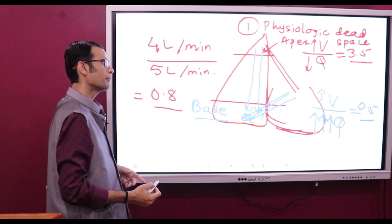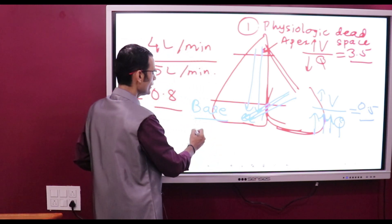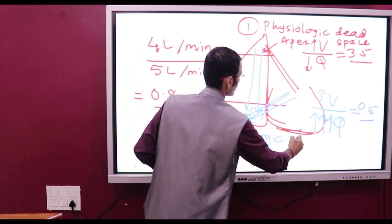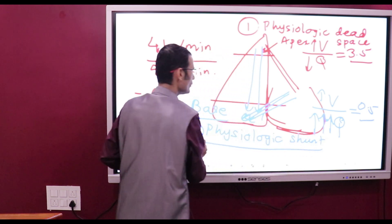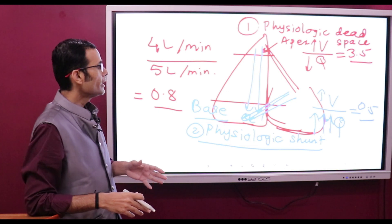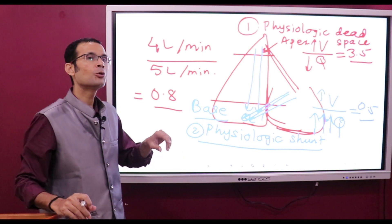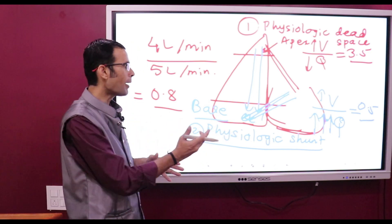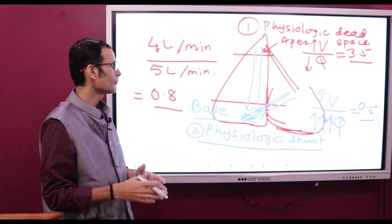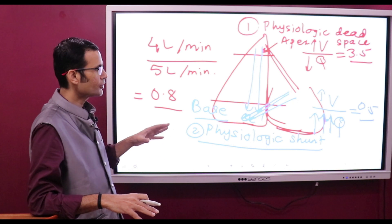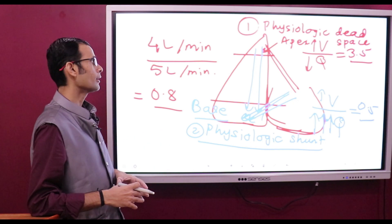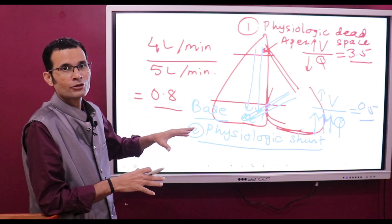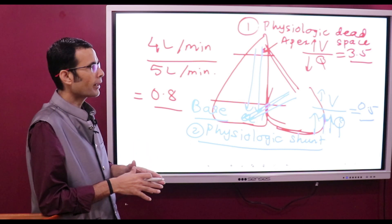The ventilation-perfusion ratio at the very base of the lung is 0.5. This scenario is called physiologic shunt. It means there is blood flow but not enough ventilation to match it, and therefore the blood is shunted past the alveoli without picking up oxygen. Physiologic shunt normally occurs near the base of the lung. These are the two scenarios created by gravity when a person is in the upright posture.